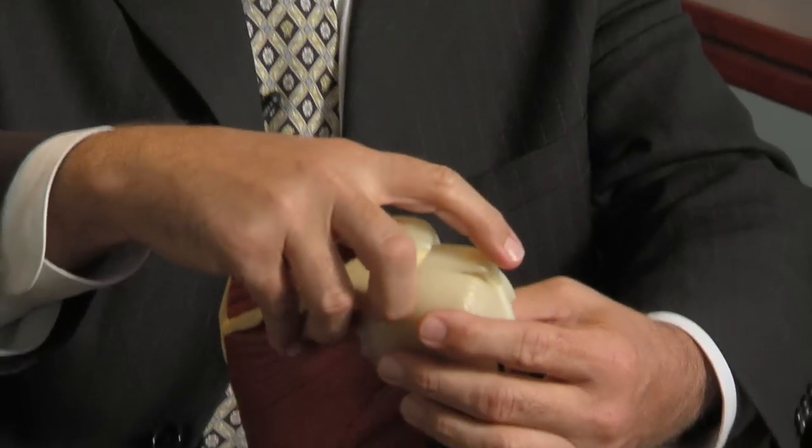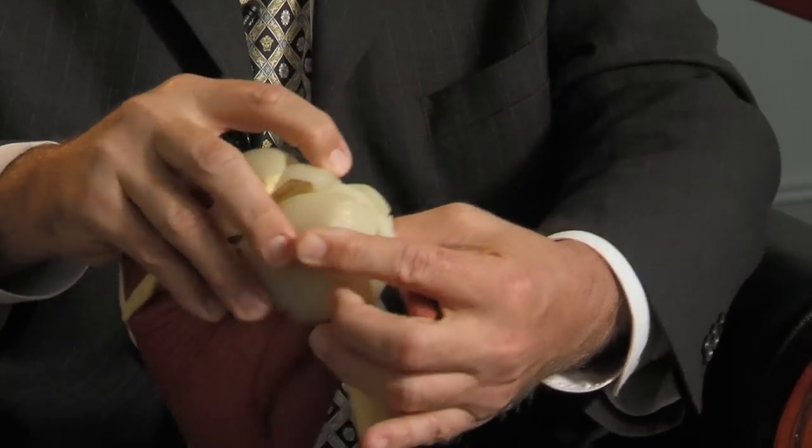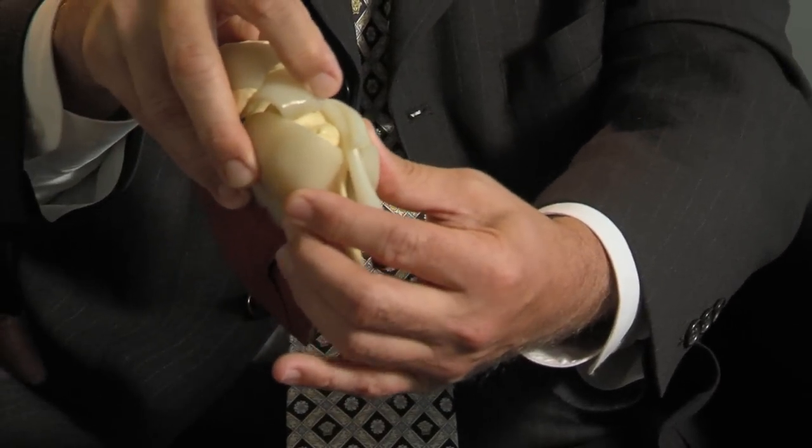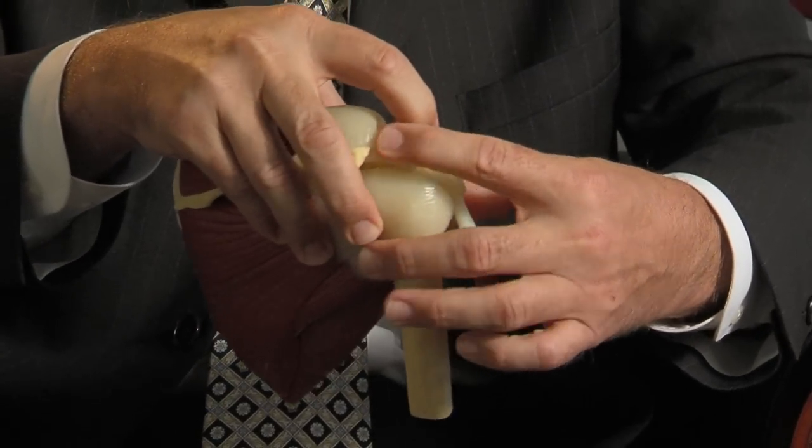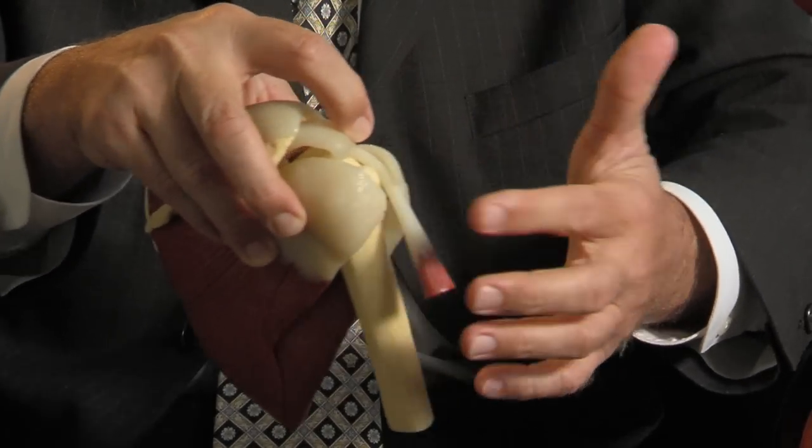So when you get a rotator cuff tear, typically what will happen is the tendon will tear from the bone, leaving a deficiency in the tendon like this. And the reason that patients get pain as a consequence of that is primarily due to overload of the surrounding tendons.